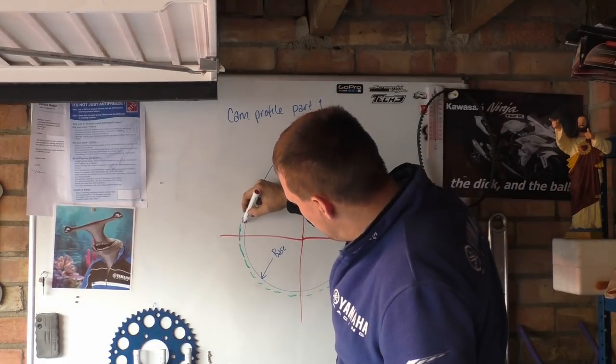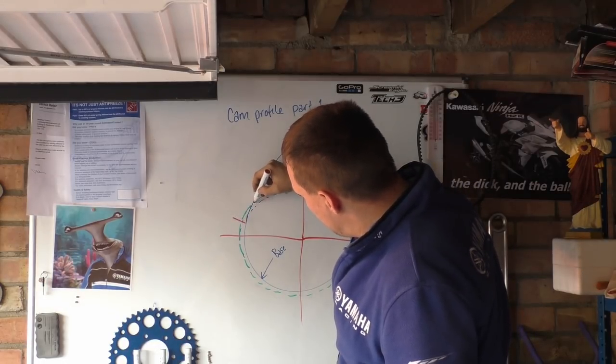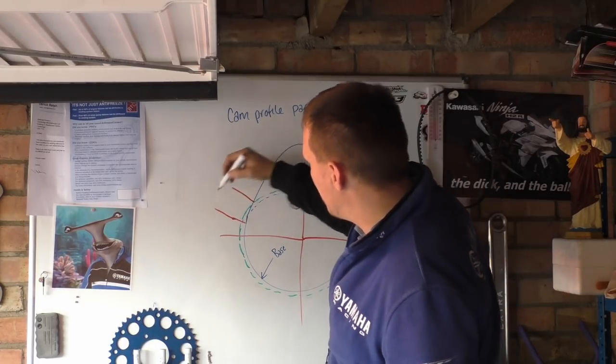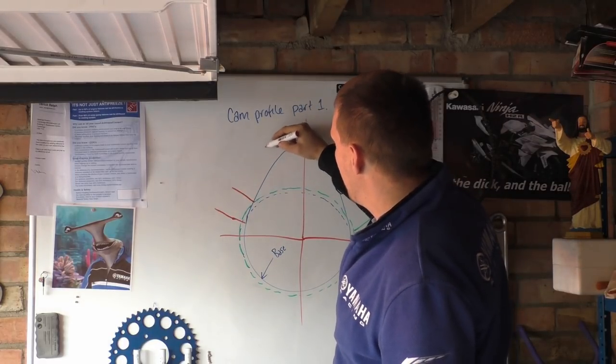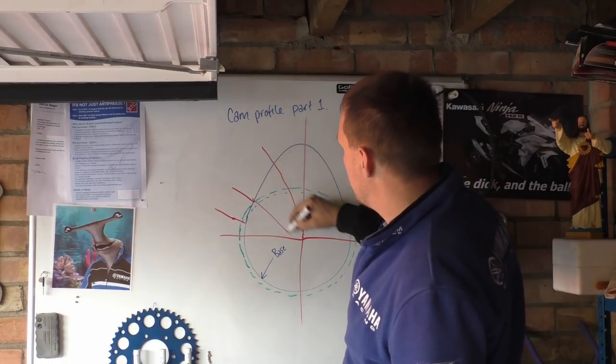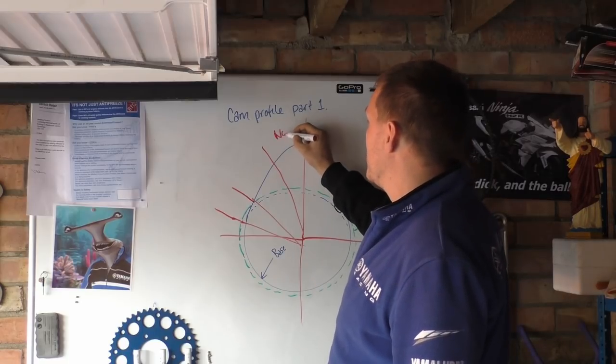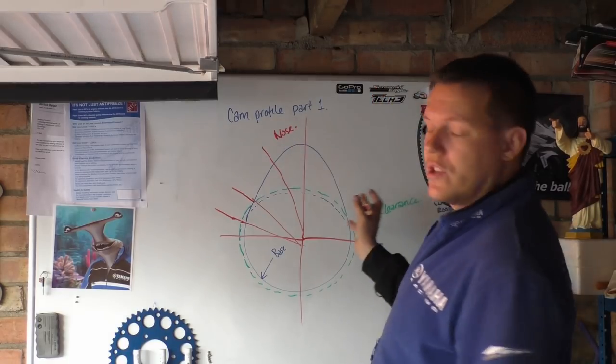So what we have is this section, which is from there to there where these two cross - I'll explain that in a second, it's better with a graph actually. Then we have this section here, and all these sections come to the center like that. This is the nose, and it's symmetrical - for a symmetrical cam, it's symmetrical.